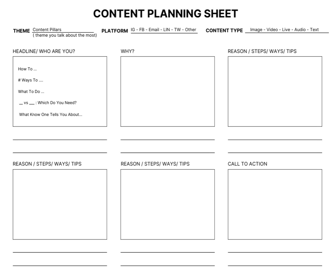This is the content planning sheet I wanted to share with you. At the top you'll see your theme — these are your typical content pillars that you discuss on a regular basis. Maybe it's marketing, maybe it's getting your entrepreneur business started, maybe it's motivation. This is the theme that you would typically talk about.